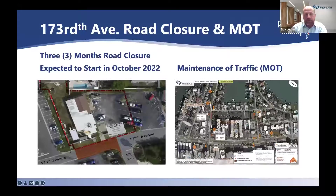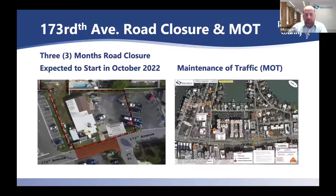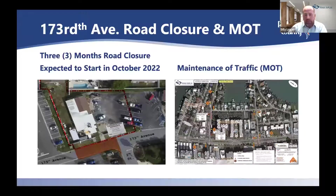The next road closure is on 173rd. The picture on the right is the preliminary plan for all the signage and detours, and the red area outlines what we will be disturbing. This road closure is approximately three months because there is a lot of existing piping in the ground and new piping to put in for the new pump station. This will start approximately around October of this year, and our security fencing will be relocated to encompass this road closure to ensure no access from the community, as there will be some deep excavations.